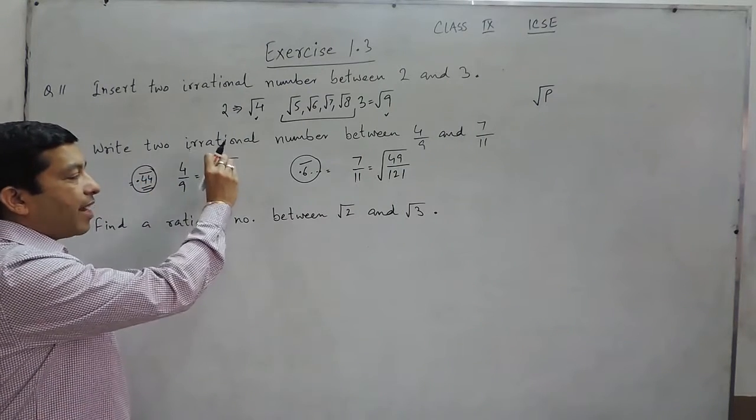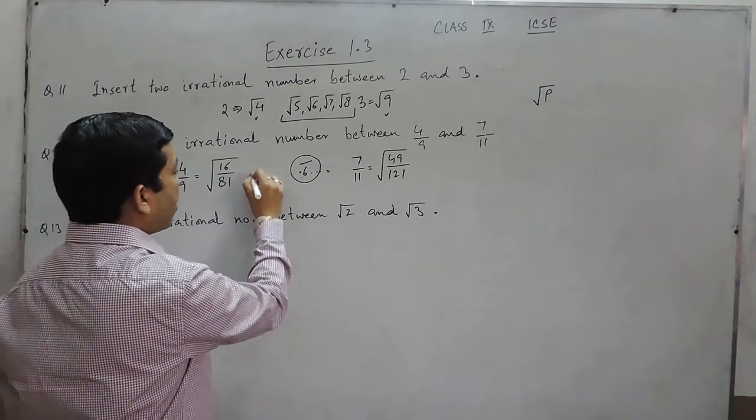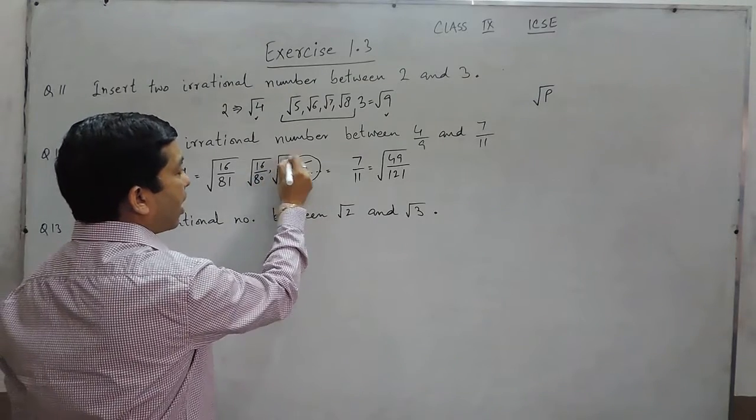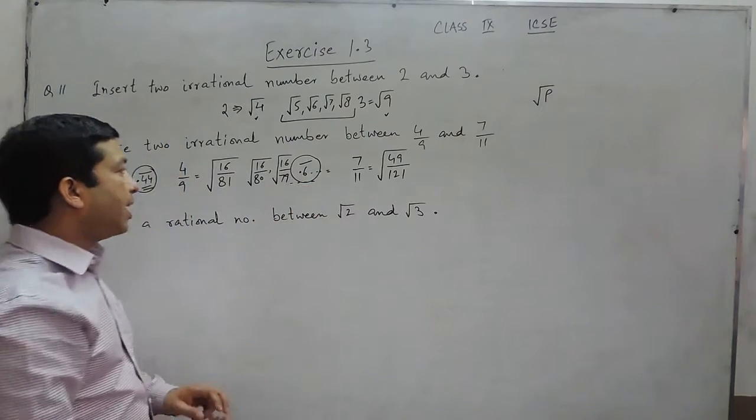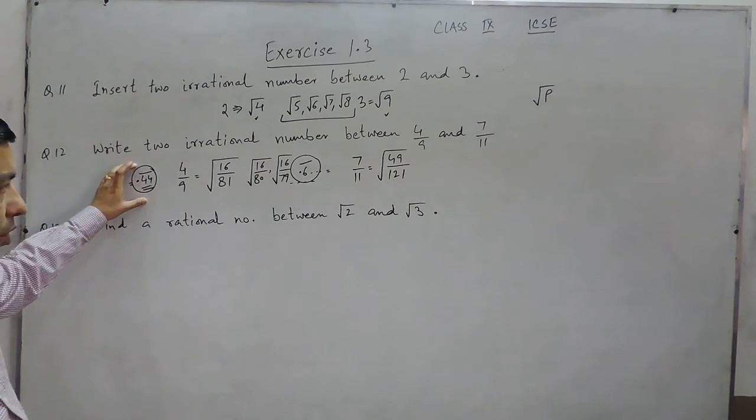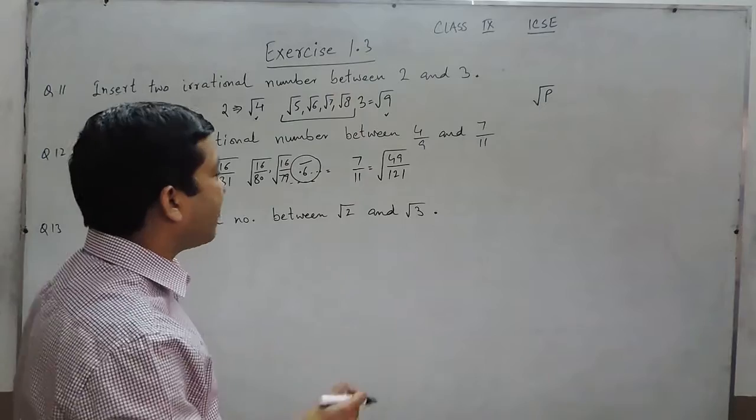So when we have to increase the value, so the denominator should be decreased. So under root 16 upon 80 or under root 16 upon 79, all these numbers will be definitely greater than 4 upon 9 or 0.44, and this will go up to various infinity places.